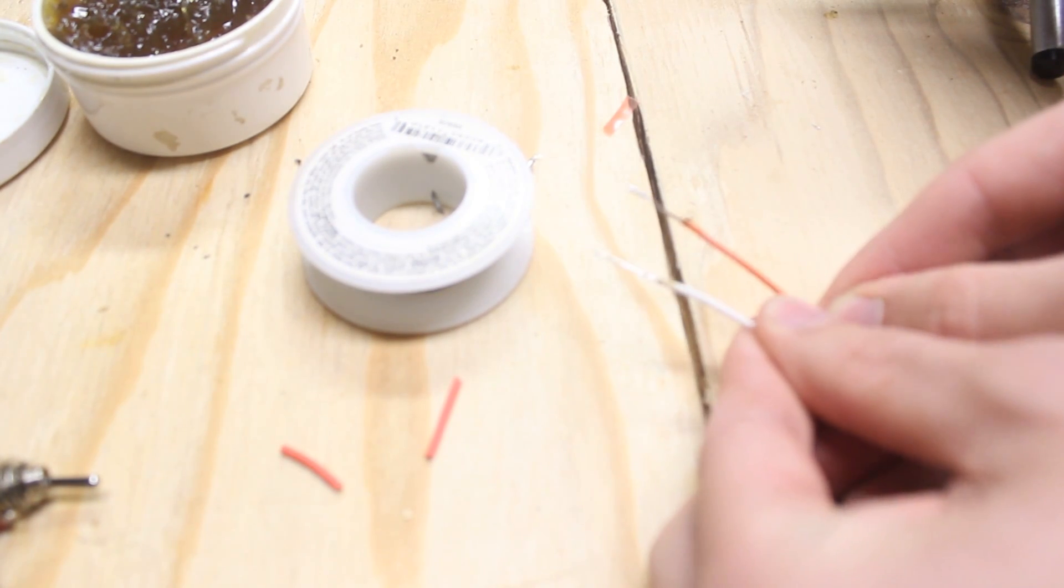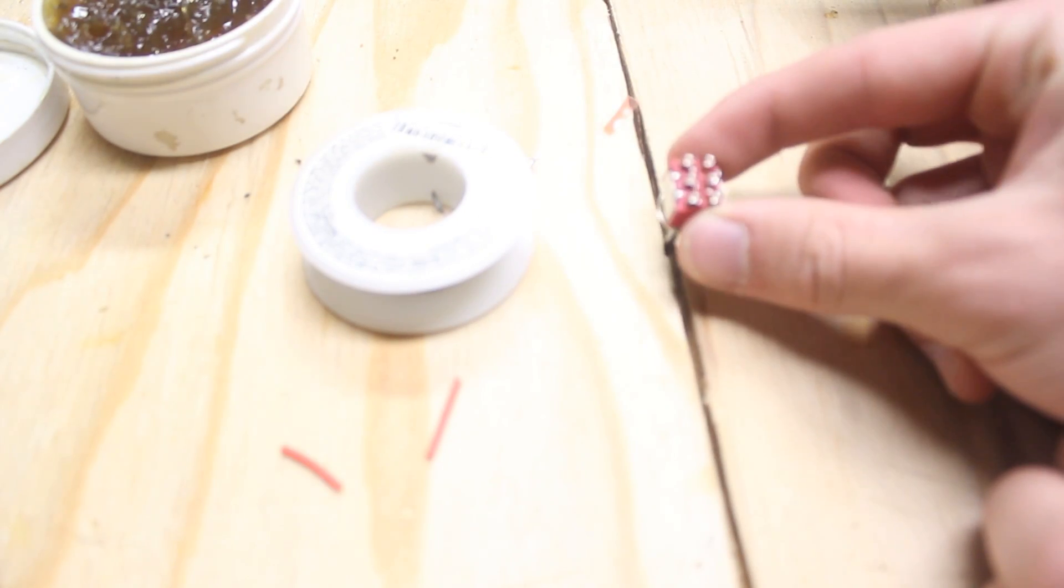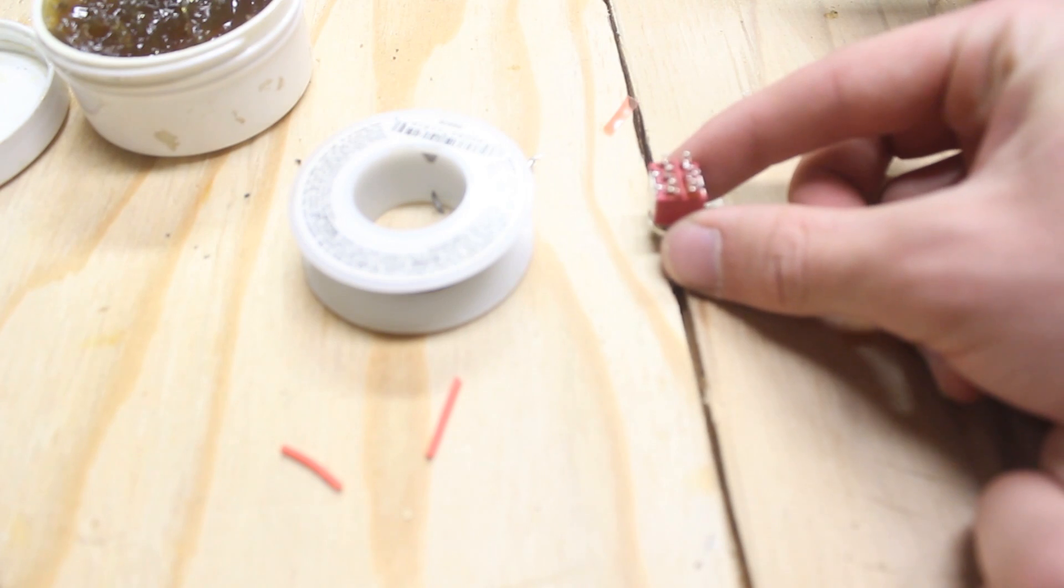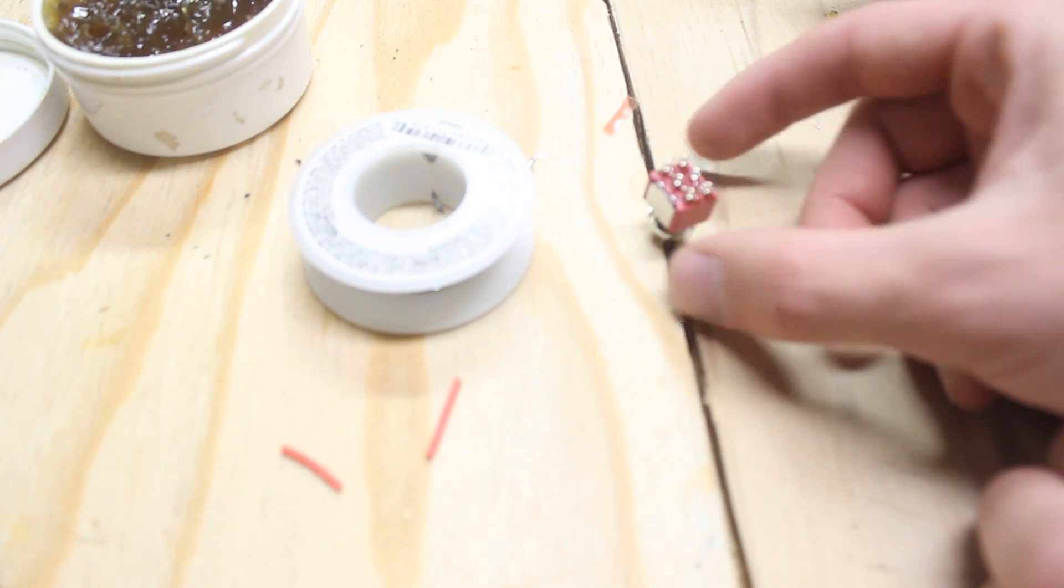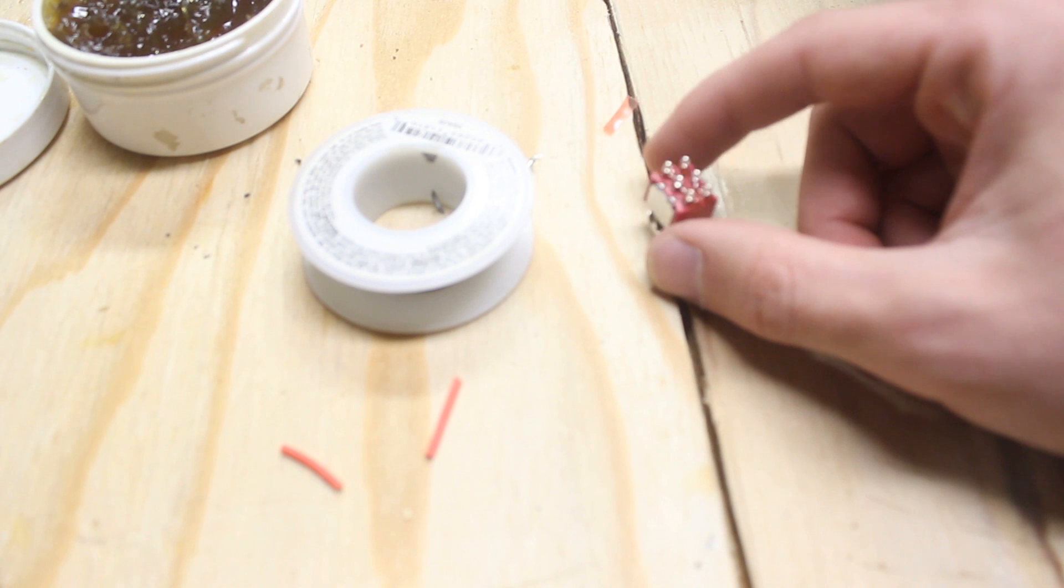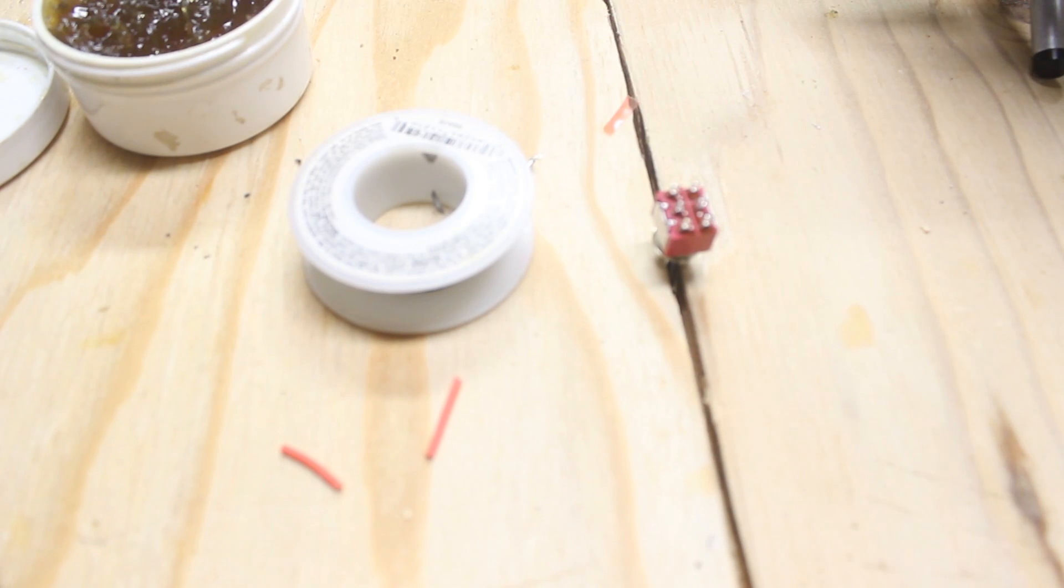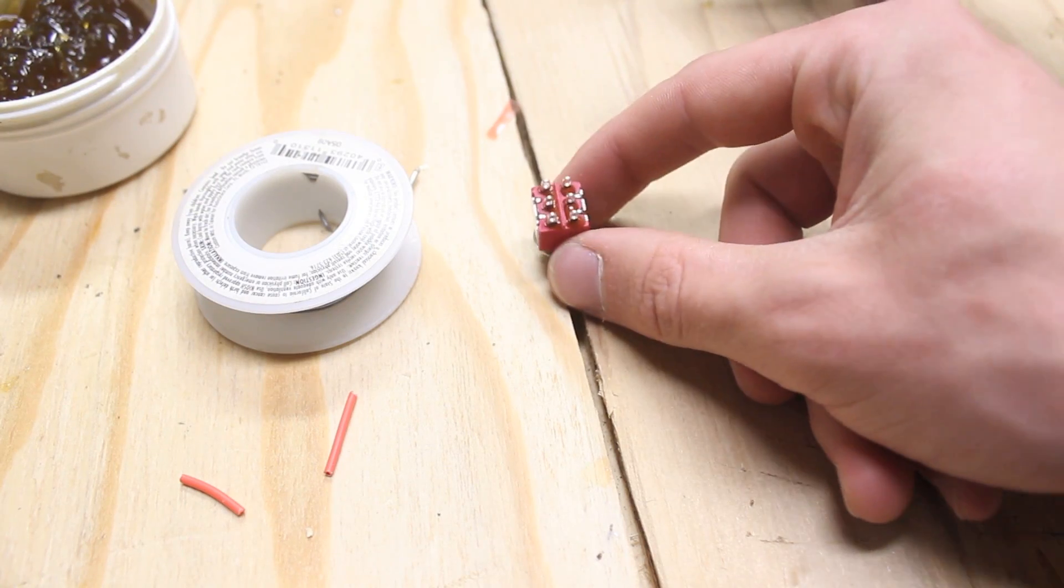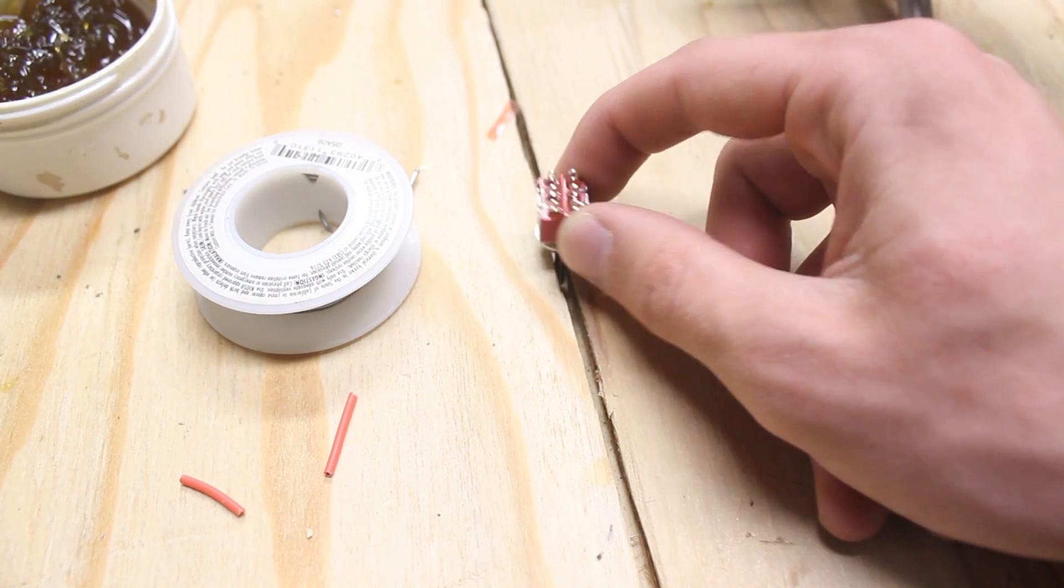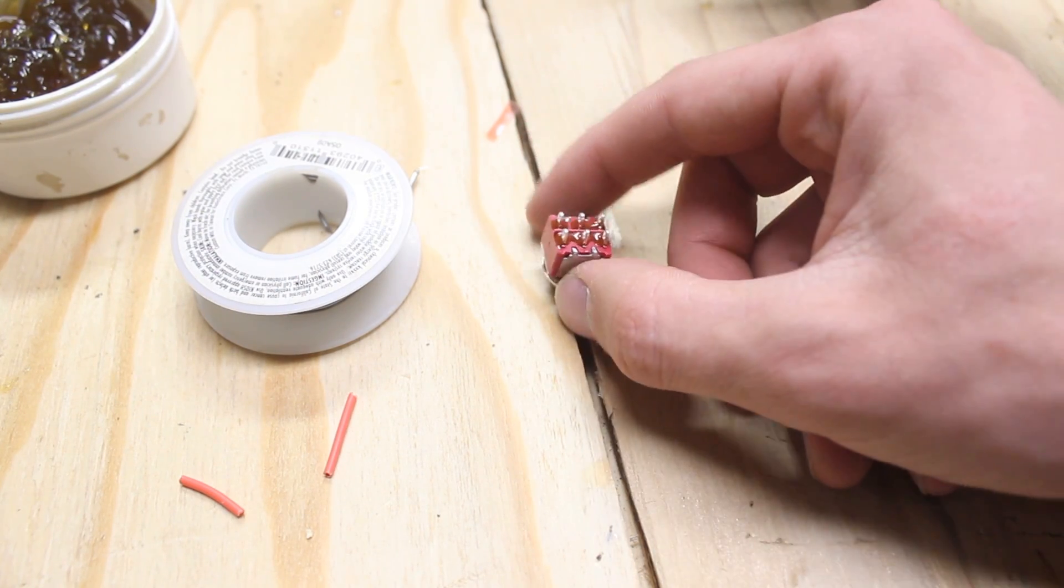So I have both my wires tinned here. And the next thing we're going to do is it's helpful if you have something to stick the toggle switch in. So preferably you would have a clamp, but I unfortunately do not. So what I'm going to have to do is just stick it here and it'll hold it in place while I work on it.